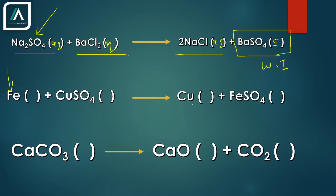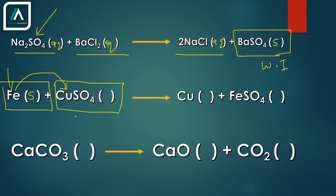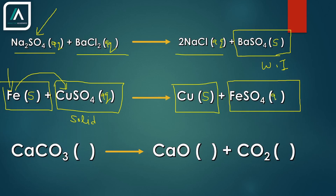Next: iron plus copper sulfate gives copper plus iron sulfate. This is an example of displacement reaction — iron displaces copper because iron is more reactive than copper. Iron is a metal, so it is solid. Copper sulfate is a salt in a displacement reaction, so we take it as aqueous solution. We add iron into the aqueous solution of copper sulfate and get copper, which is a metal, so it will be solid. Iron sulfate will also be aqueous because ferrous sulfate is water-soluble.